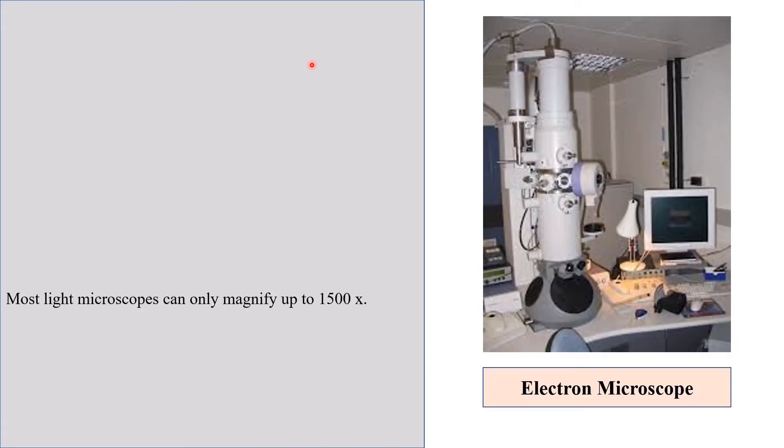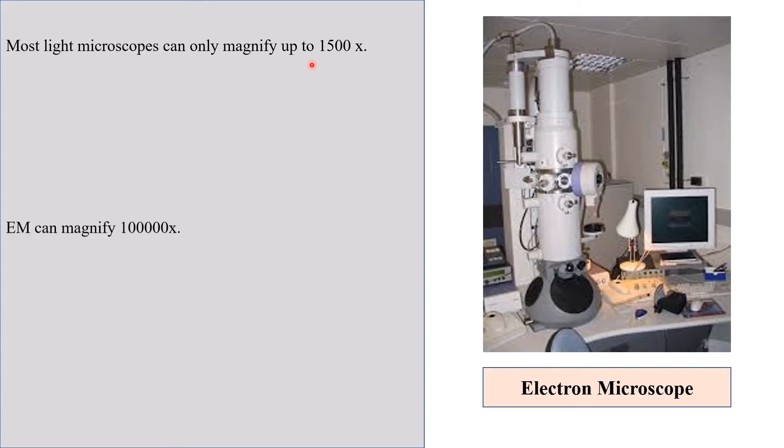So first of all, most light microscopes can only magnify up to 1500x, whereas an electron microscope can magnify 100,000x.